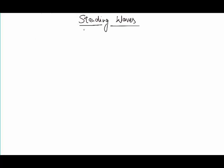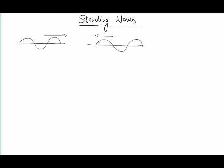So we are talking about standing waves here. Standing waves are formed when two waves moving in two different directions meet each other — not just at a point, but they are meeting each other in a medium.